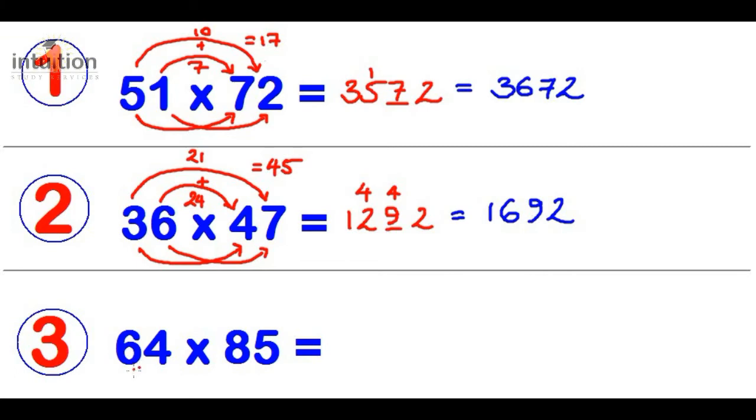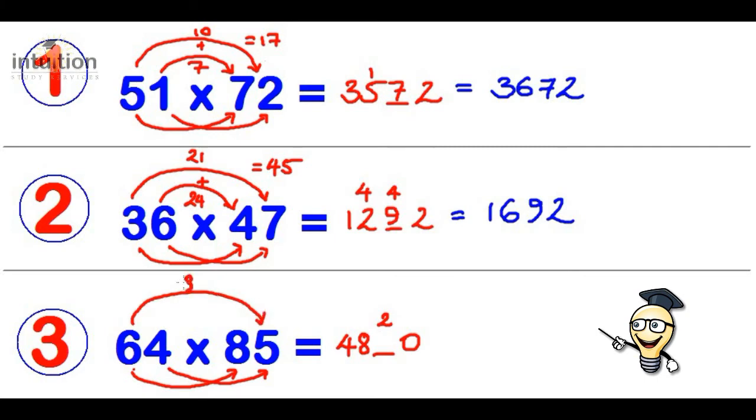Number 3. 6 times 8 is 48. Leave a gap. 4 times 5 is 20. Carry the 2. 6 times 5 is 30. We want to add that to 4 times 8, which is 32. That totals to 62. Adding this 2 gives 64. Carry the 6. And that totals to 5,440.